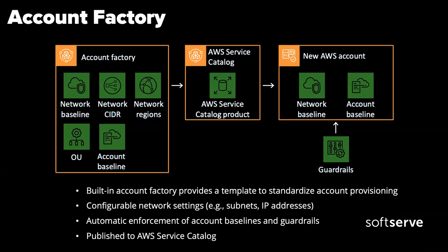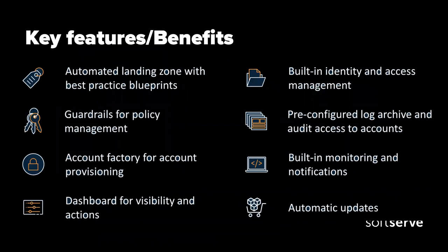From my perspective it's better to create an account with Account Factory without any network configuration, and then create your VPC configuration with whatever tools you like - web console, CloudFormation, Terraform. One key point: when you create an account with Account Factory, all default VPCs in that new account will be deleted, according to AWS best practices. To summarize: with Control Tower you can create an automated landing zone, manage policies, and quickly create accounts for your organization.